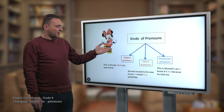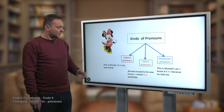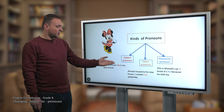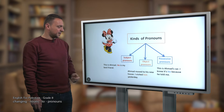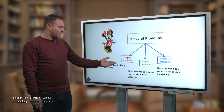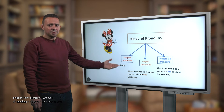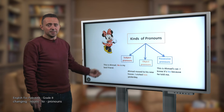The second kind is the object pronouns. For example: 'Ahmed moved to his new house. I visited him yesterday.' Here the pronoun 'him' came after the verb 'visited', so it's an object pronoun. 'Him' refers to Ahmed, but it functions as an object, not a subject.